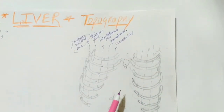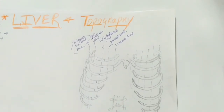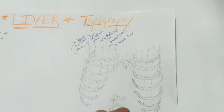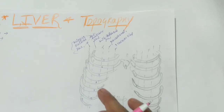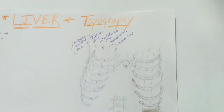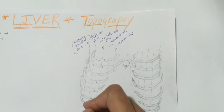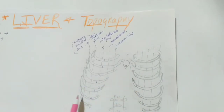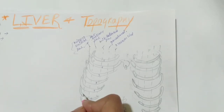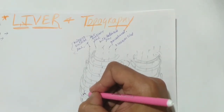Now we will begin with our upper boundary. The liver actually originates from your 10th intercostal space. I have marked the 5th, 6th, 7th, 8th, 9th, and 10th ribs. The liver is located in this region. Its upper boundary starts at the 10th intercostal space, just on the middle axillary line. From here, this boundary ascends upward.